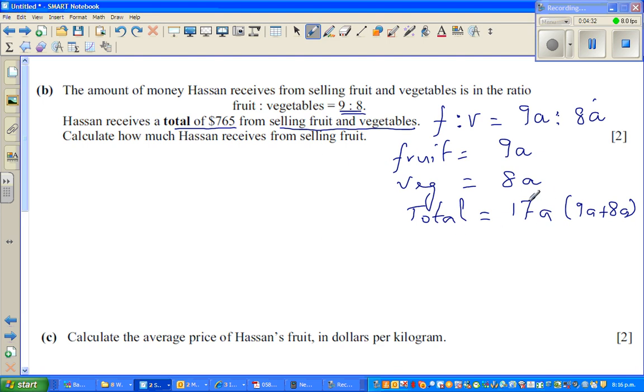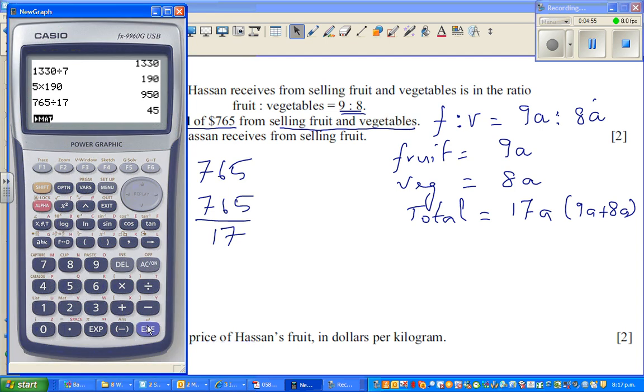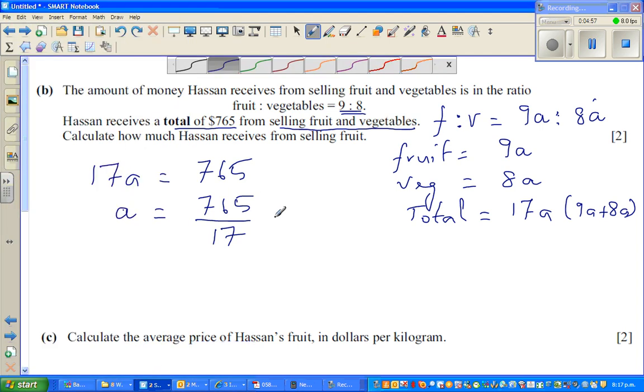So I can say, if this is a total of ratio and this is a total of money, I can equate this with this. So 17A is equal to 765. So I should divide both sides by 17. So A is 765 divided by 17, which is $45.